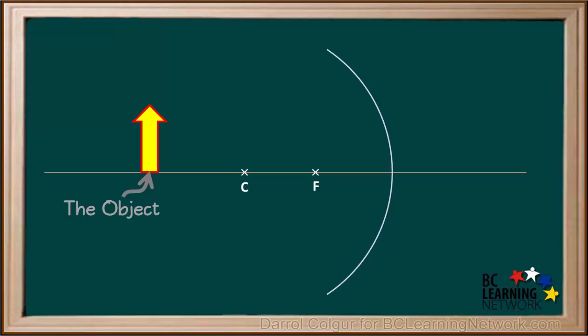We start by drawing a line straight from the top of the object to the surface of the mirror. It must be parallel to the principal axis. Now we bounce this ray off the surface and extend it down through the focal point, like this.